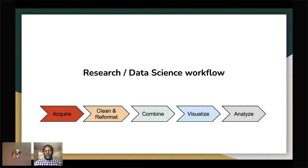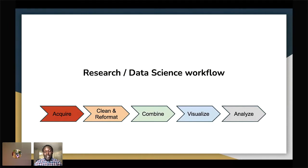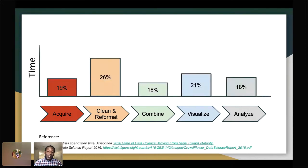As scientists, we do a lot of data processing and we know the data processing workflow. It usually starts with acquiring data, then we clean and reformat the data, combine it, visualize it, and analyze it. All these parts take different amounts of time. Scientists spend quite a lot of time acquiring data and even more time cleaning it — time we could better utilize in analyzing data and creating cool science.